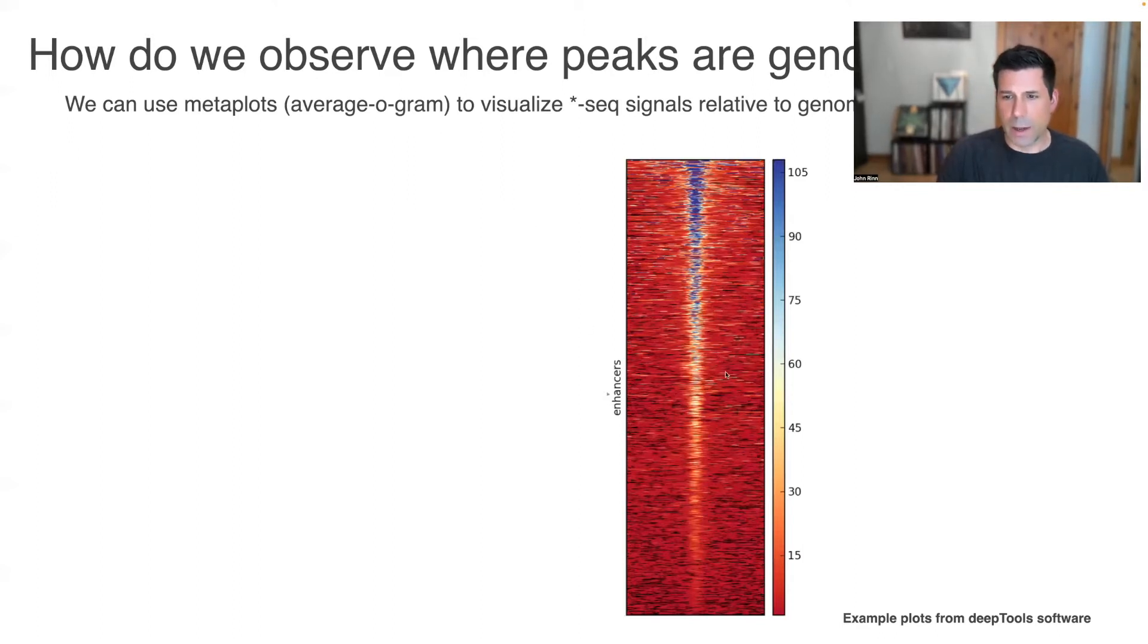Here's an example from the DeepTools software. Each row is an enhancer, but let's say in our case moving forward it's going to be a promoter. From upstream 1kb to downstream 1kb would be the width of each row, and the middle would be the transcriptional start site. We can see all the data individually here, where red is lower numbers and blue is higher numbers.